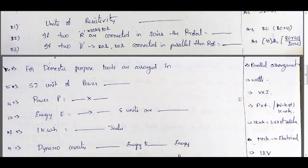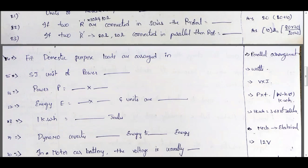For domestic purposes, loads are generally arranged in parallel arrangement, because in parallel the voltage is the same for all loads and the current divides. The SI unit of power is watts or kilowatts.